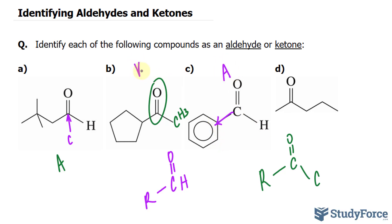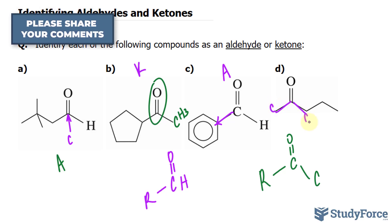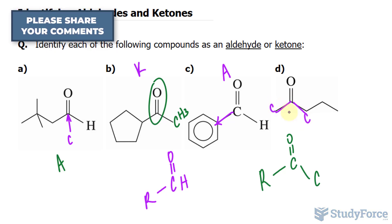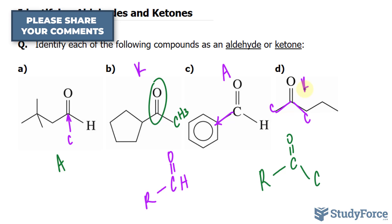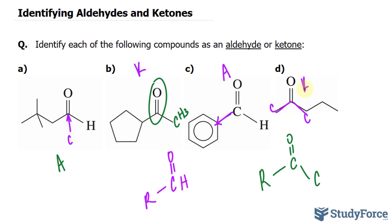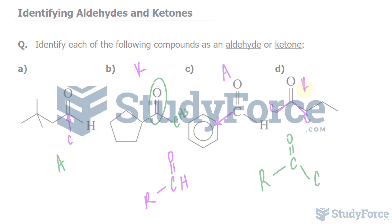I'll write down K for ketone here. Over here, we have a carbon double bonded to oxygen, and it's single bonded to two other carbon molecules. So that is a ketone. And there you have it — that's how to identify aldehydes and ketones.